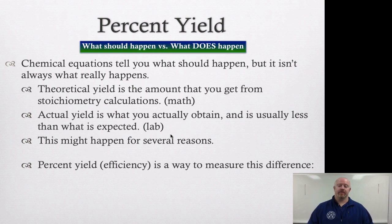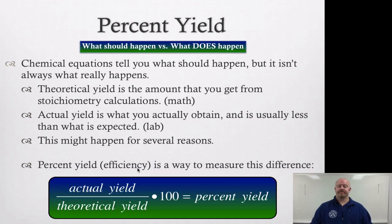Now the way we calculate that is by percent yield or efficiency. Again, this is nothing new to us in terms of the math. We just take what we actually got divided by what we thought we should have got in theory, take it times a hundred to get a percent yield. It's very much like a percent composition type of process, but instead of calculating for partial divided by whole, here we're talking about how much did we make versus how much we should have made.